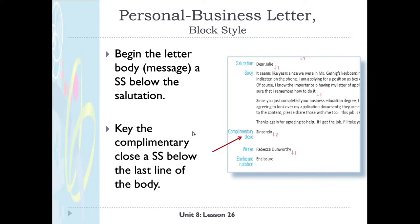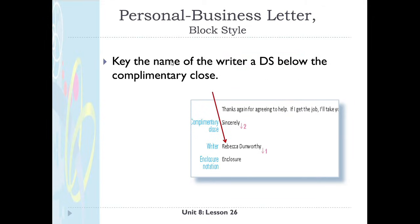Then we hit enter again and type 'Sincerely' for the complimentary close, which is a single space below the last line of the body. Notice open punctuation means no commas or colons — so 'Dear Julie' and 'Sincerely' have no punctuation. Then we hit enter twice for a double space and key the writer's name. In this case, Rebecca Dunworthy types her name at double space below the complimentary close.